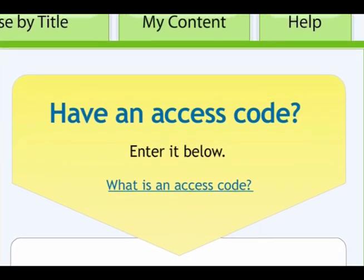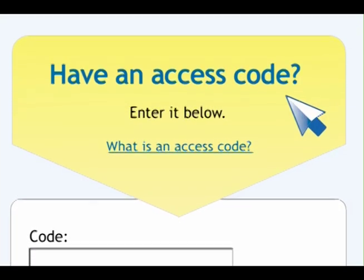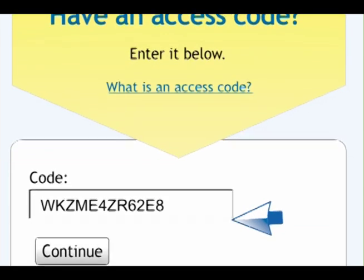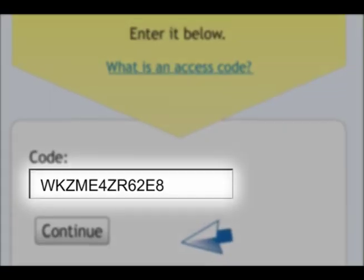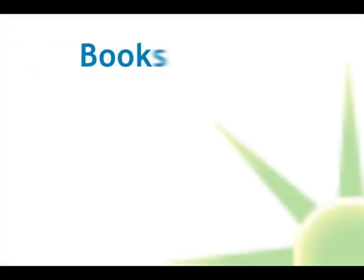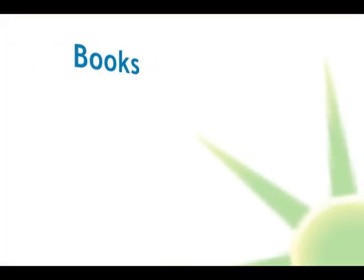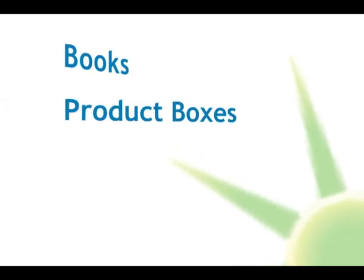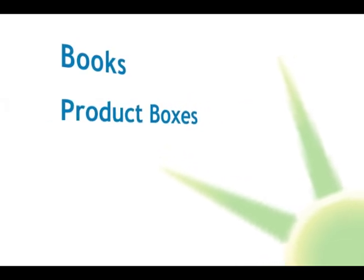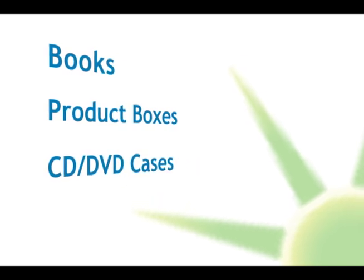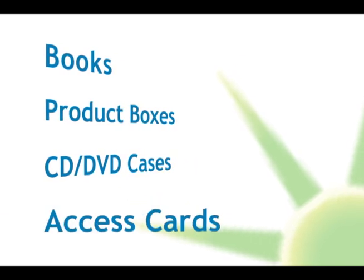Once logged in, you'll need to supply the access code for the title you wish to access. Your access code will look like the one shown here. Access codes can be found on selected books, located inside the front or back cover, product boxes, cards inside CD and DVD cases, and purchased access cards.